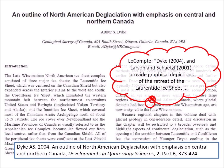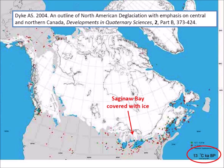Do you remember the reference to Dyke mentioned by Malcolm Lecomte in Graham Hancock's book? This is Dyke's 2004 paper and it has several images showing ice coverage by radiocarbon age. The image shows Saginaw Bay covered with ice at 13 thousand years before the present. So, according to Dyke, Saginaw Bay was covered with ice just before the onset of the Younger Dryas.